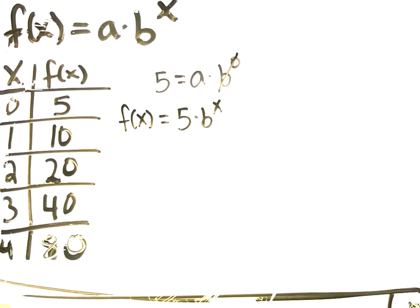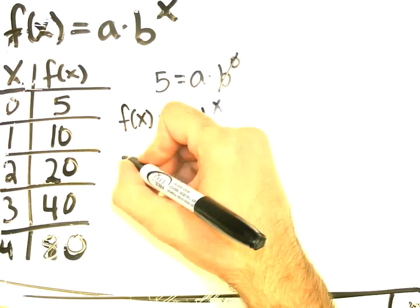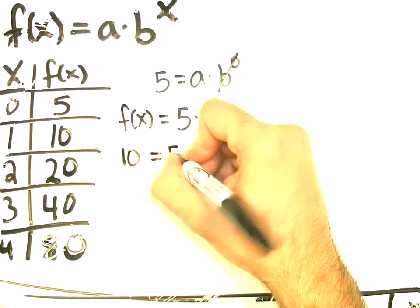Now I can rewrite my equation like this. But I still don't have it done. I've got to figure out what B is. So let's try a different point. Let's plug in this one next. So 10 equals 5 times B to the 1.